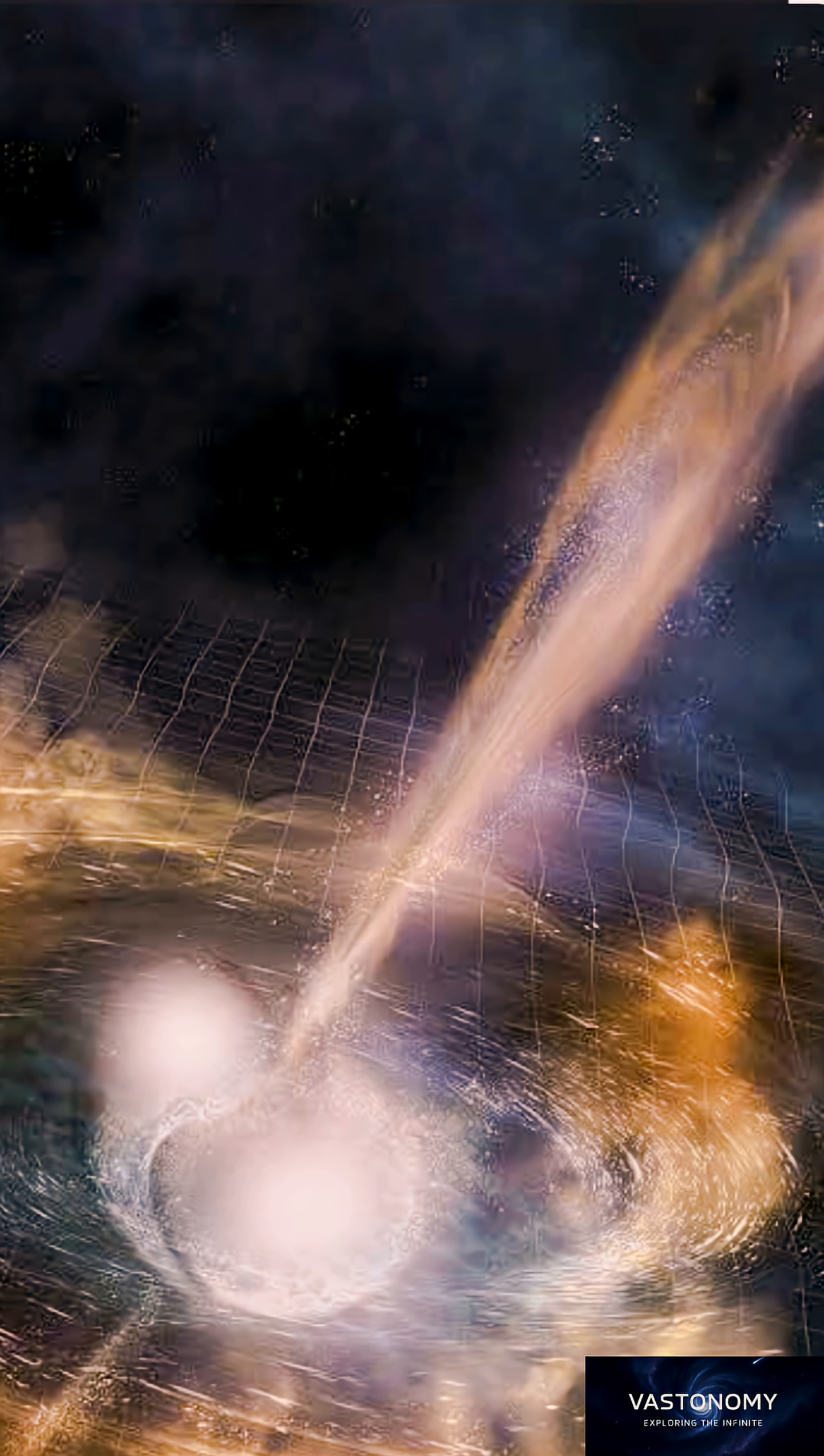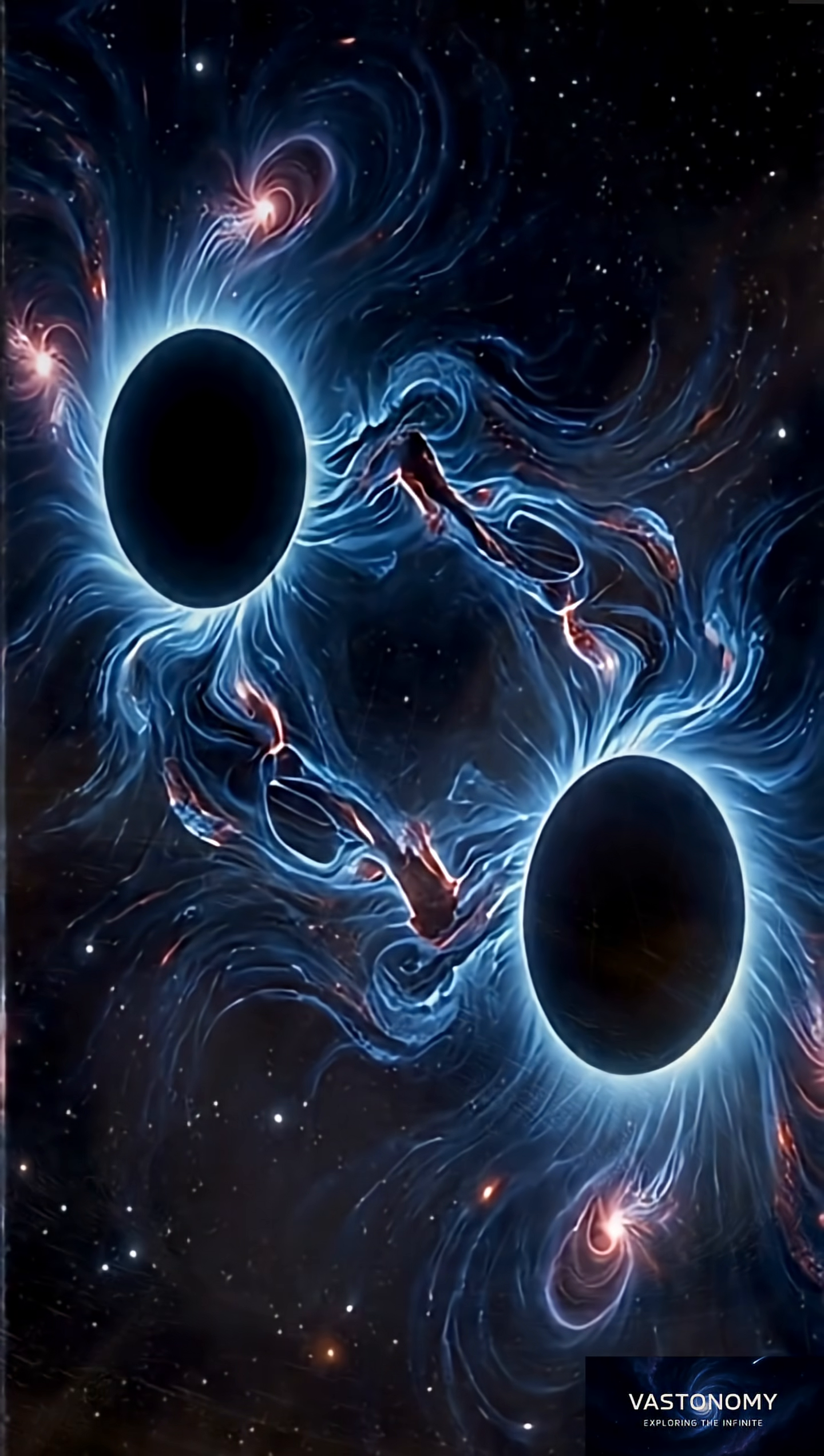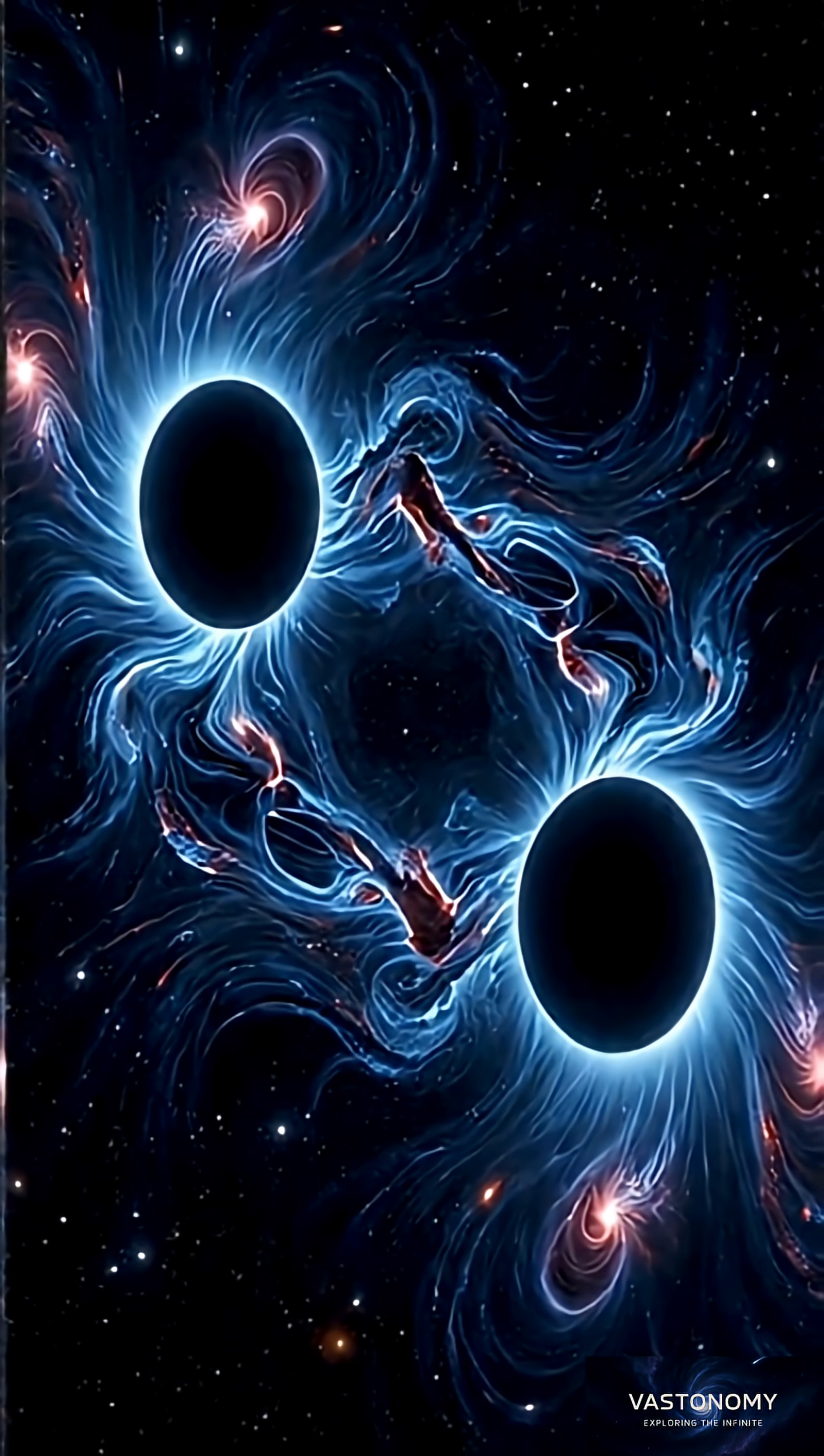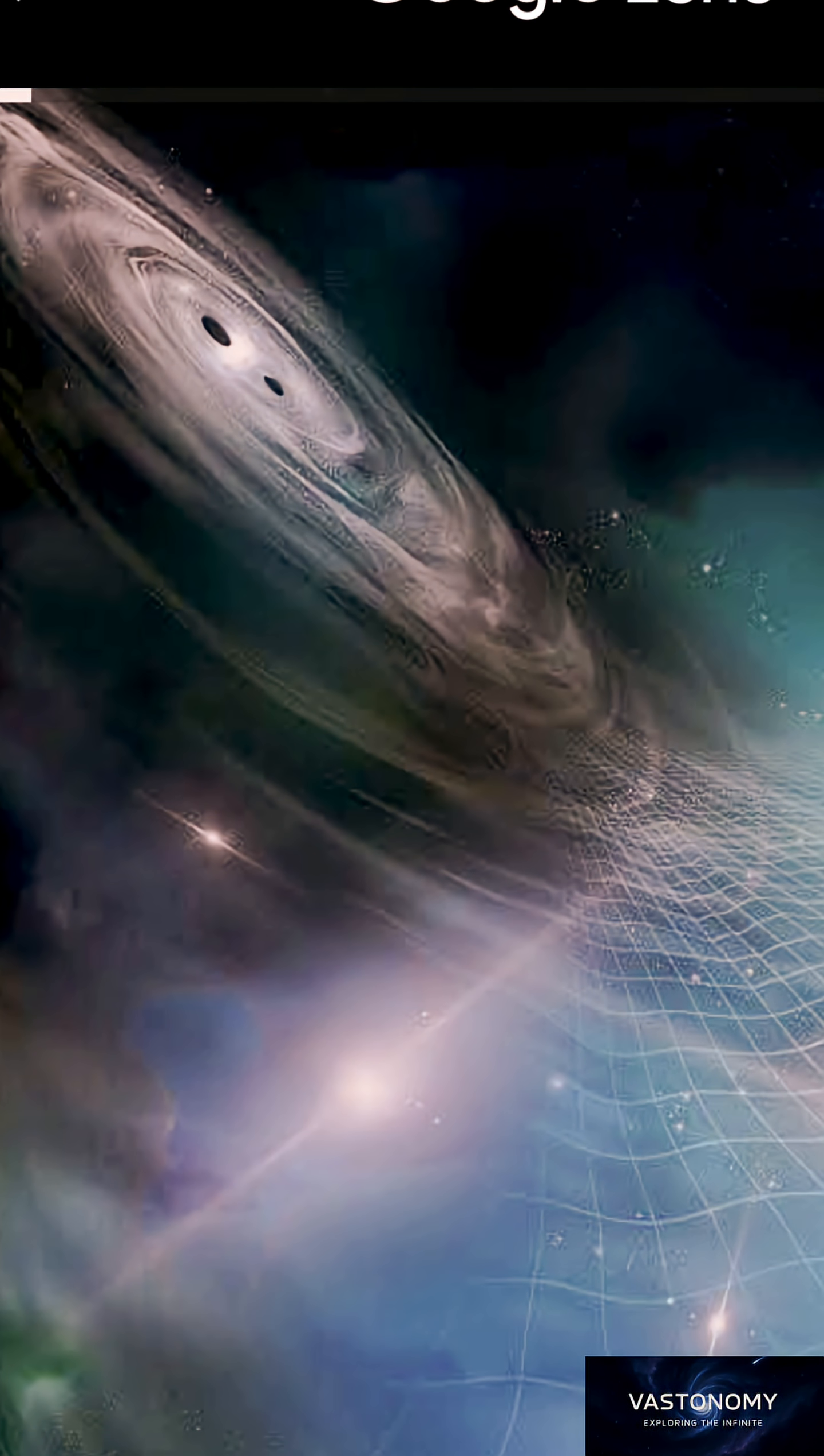Over a century ago, Albert Einstein predicted something extraordinary: that space and time are not rigid, but flexible, like a fabric that can bend and ripple.